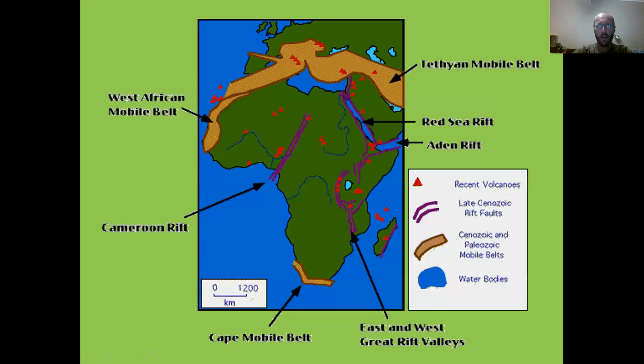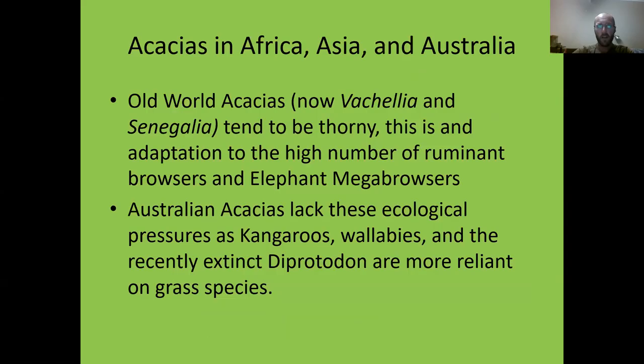Africa as well is currently breaking up into different continents. The Great Rift Valley is splitting apart, pushing into the Red Sea rift, and the Cameroon Rift is also splitting apart. We can expect that in the next 11 million years Africa will probably be two or even three separate continents, geographically isolated, which will drive new organisms evolving. Humans certainly won't be around for that.